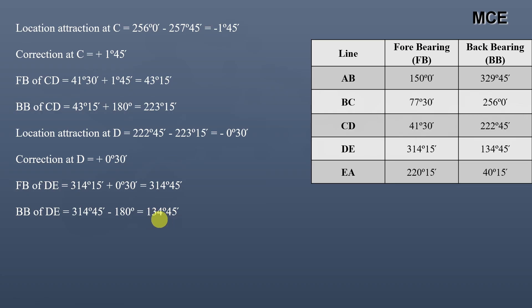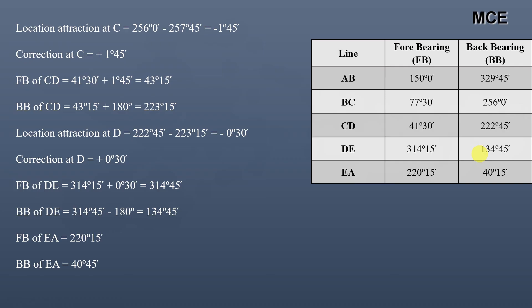The correct back bearing of line DE is 134°45', which is the same as the observed value because station E and station A are not affected by local attraction. Bearings taken from station E and station A are correct. The fore bearing of line EA is correct because it is taken from station E; it is 220°15'. The back bearing of line EA is also correct because it is taken from station A, and it equals 40°45'.